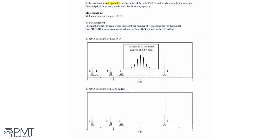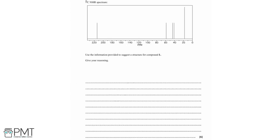A chemist isolates compound L with an empirical formula of C3H6O and sends a sample for analysis. The analytical laboratory sends back a mass spectrum with a molecular ion peak at m/z 116.0, proton NMR spectra both without D2O and with D2O added, and a carbon-13 NMR spectrum. We need to use all of this information to suggest a structure for compound L.